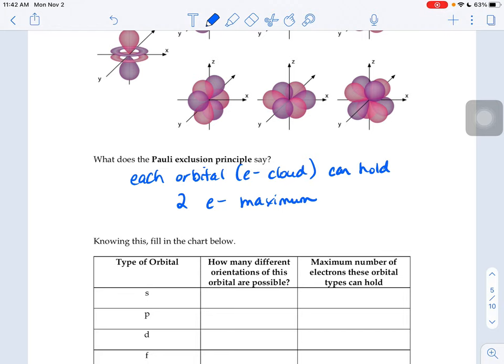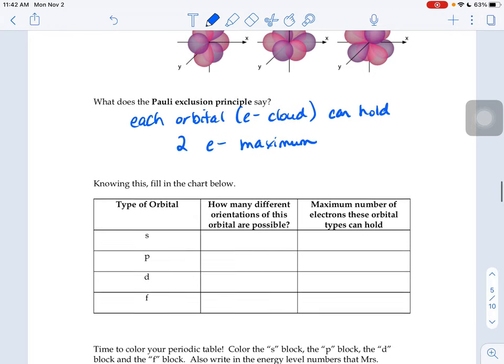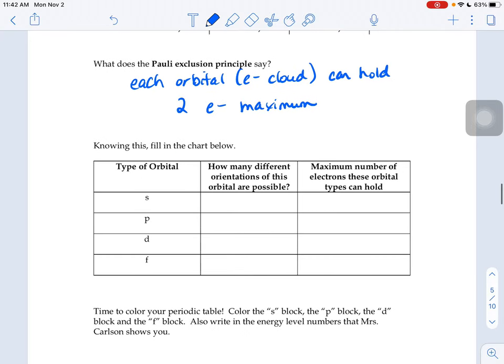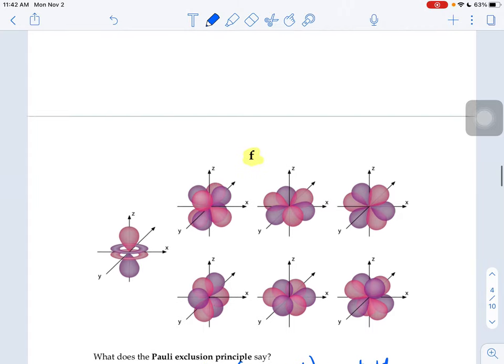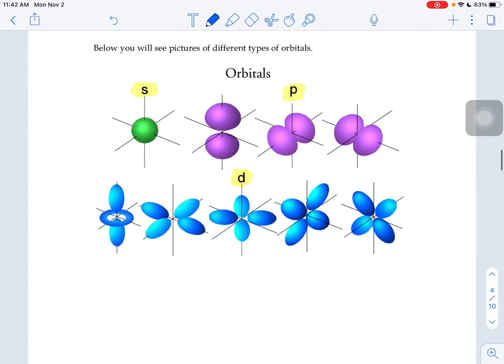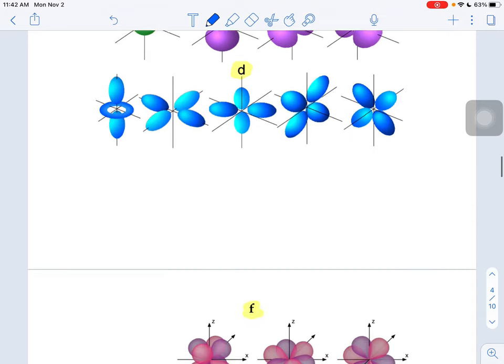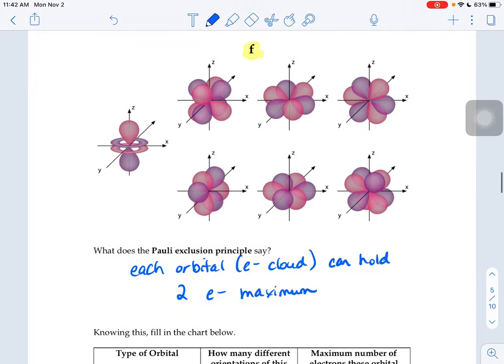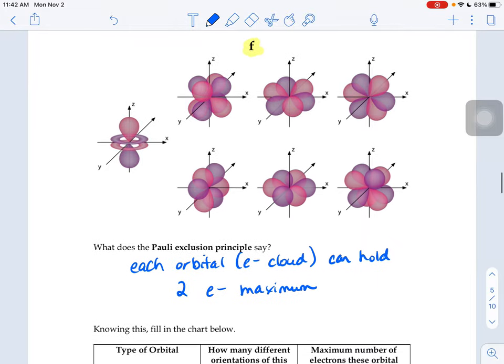And so what that means is, if I go back, it says in this chart, how many different orientations of this orbital are possible for this S, P, D, and F. So in other words, if I look at how many S kind of clouds there are, there's only one green S cloud there. There's three different kinds of P clouds that kind of magenta color. There's five different kinds of D clouds, those blue ones. And then there's seven different kinds of F clouds.